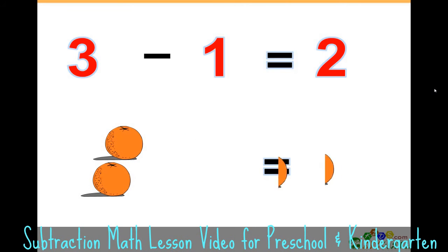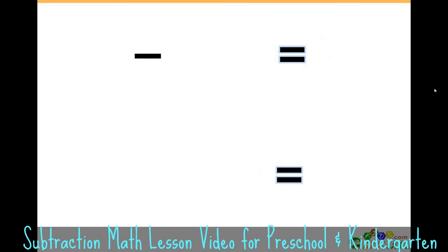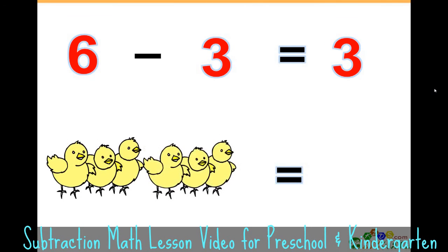6 minus 3 equals 3. We have six birds. If we take away three of those birds, there are only three birds left.